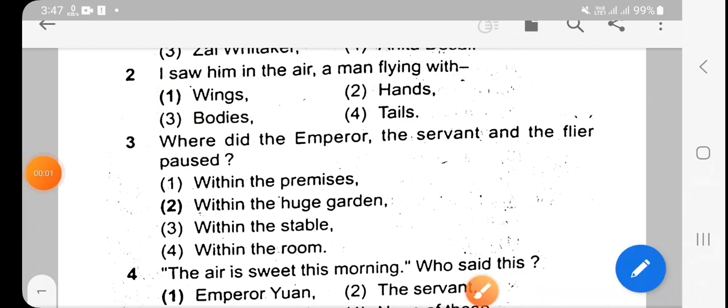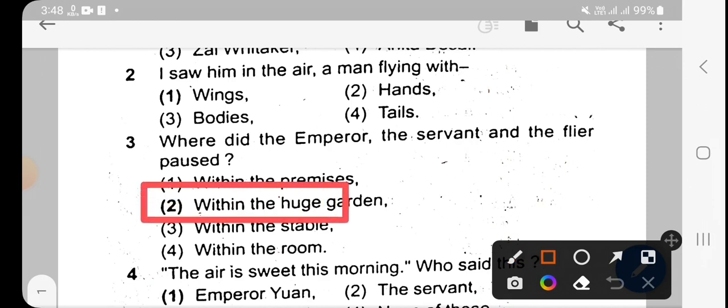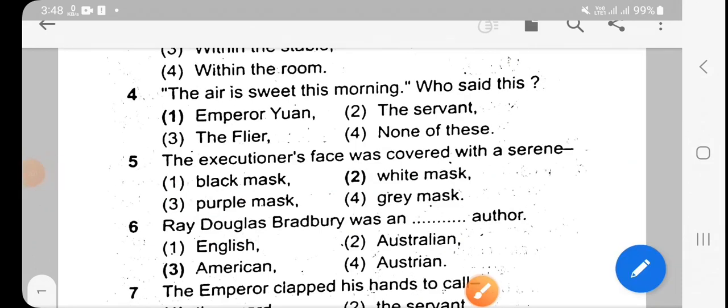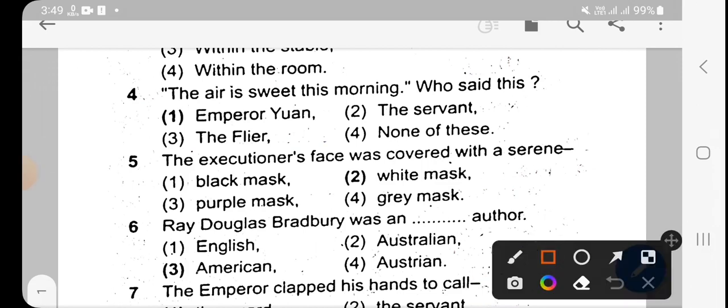Where did the Emperor, the servant, and the flier pause? The options are: within the premises, within the huge garden, within the stable, within the room. The answer is within the huge garden. Next question: 'The air is sweet this morning.' Who said this? Options are the Emperor Yuan, the servant. The answer is the servant.